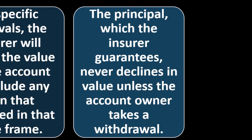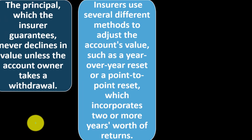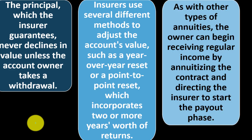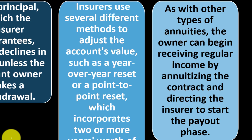The principal, which the insurer guarantees, never declines in value unless the account owner takes a withdrawal. Insurers use several different methods to adjust the account's value, such as a year-over-year reset or a point-to-point reset, which incorporates two or more years' worth of returns. As with other types of annuities, the owner can begin receiving regular income by annuitizing the contract and directing the insurer to start payments.